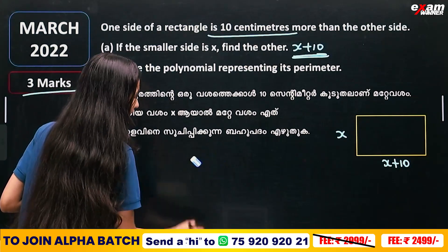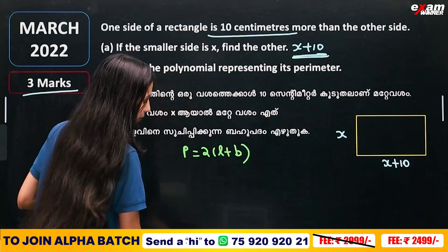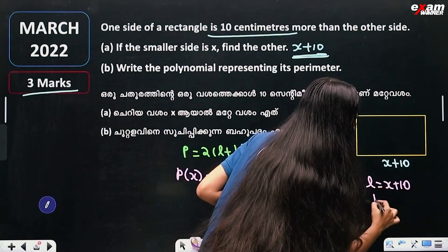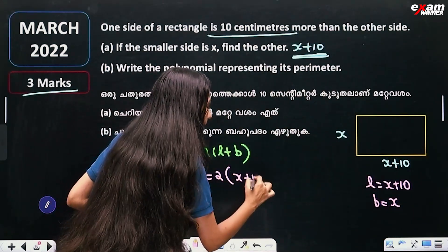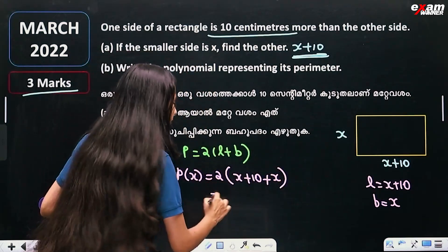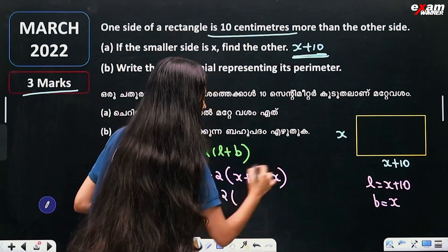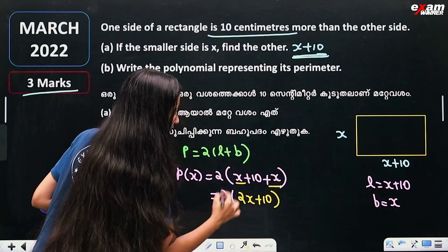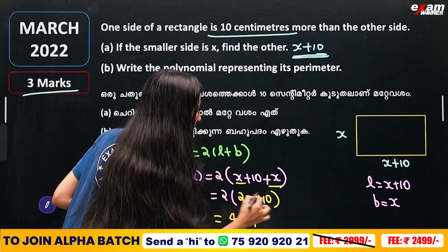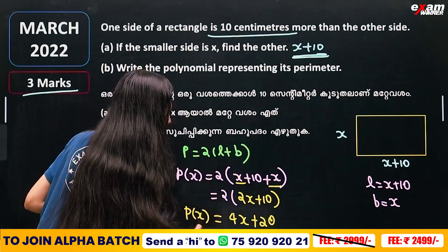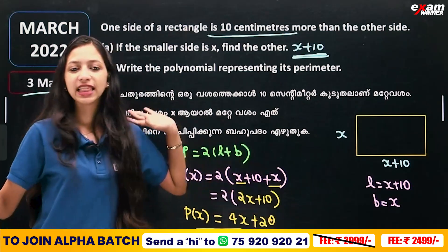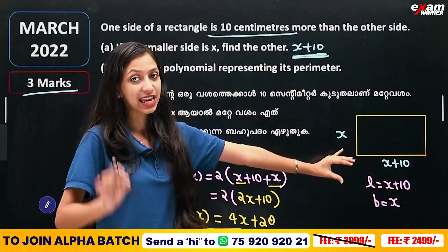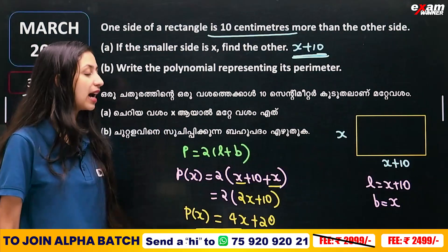What is P of x? The perimeter formula is P equals 2 into l plus b. So P of x equals 2 into x plus x plus 10, which equals 2 into 2x plus 10. This gives 4x plus 20. So the perimeter polynomial is 4x plus 20.